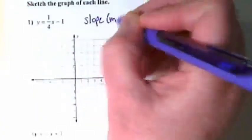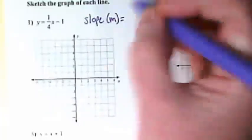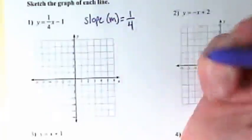What is our slope or our m in this equation here? It's 1 over 4.